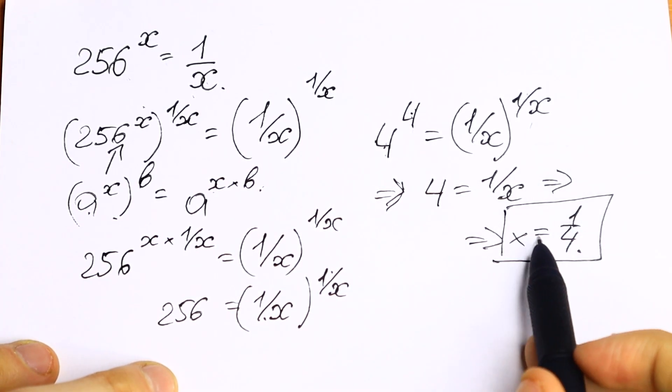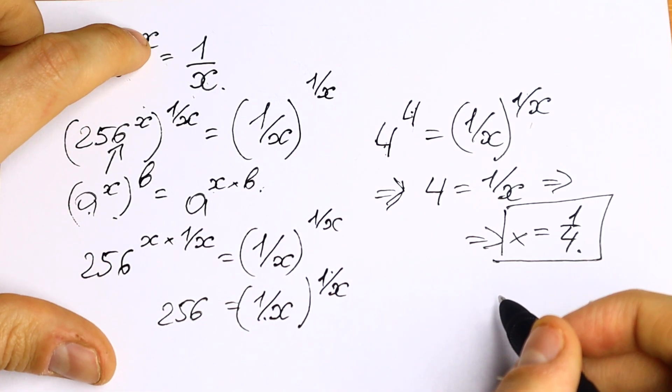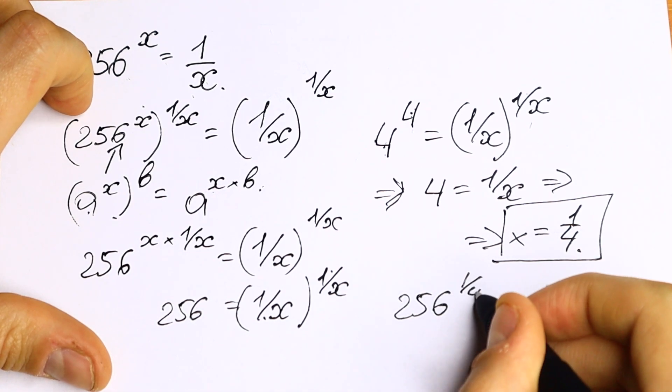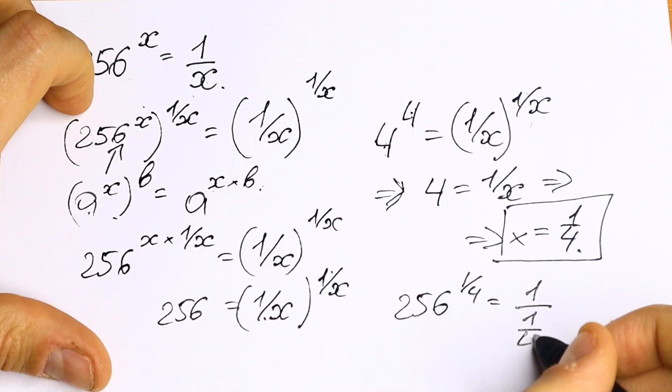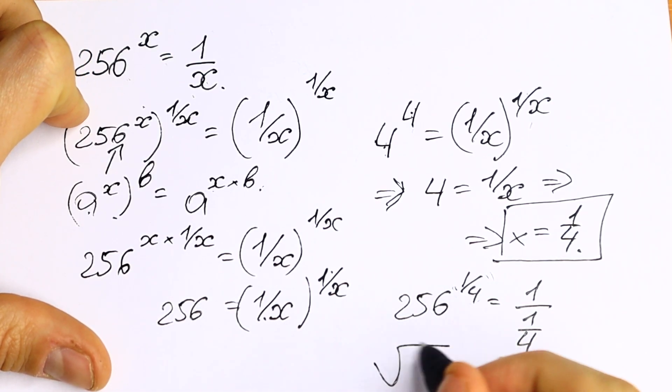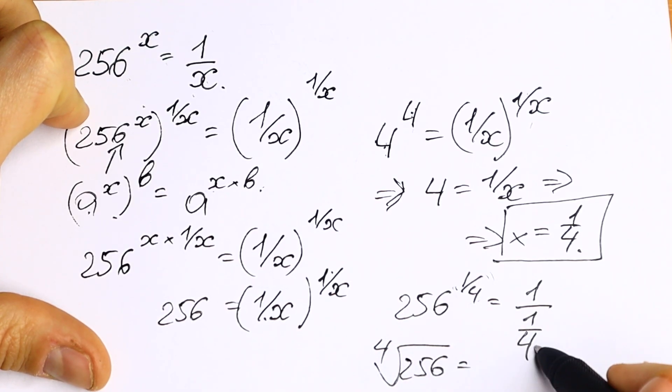Let's check this root. Let's check this one-fourth. If you plug in this one-fourth instead of x, we will have 256 to the power of one-fourth, equal to 1 divided by one-fourth. This one shows us that we will have fourth root of 256 equal to, and these four jump in our denominator. So as a result.